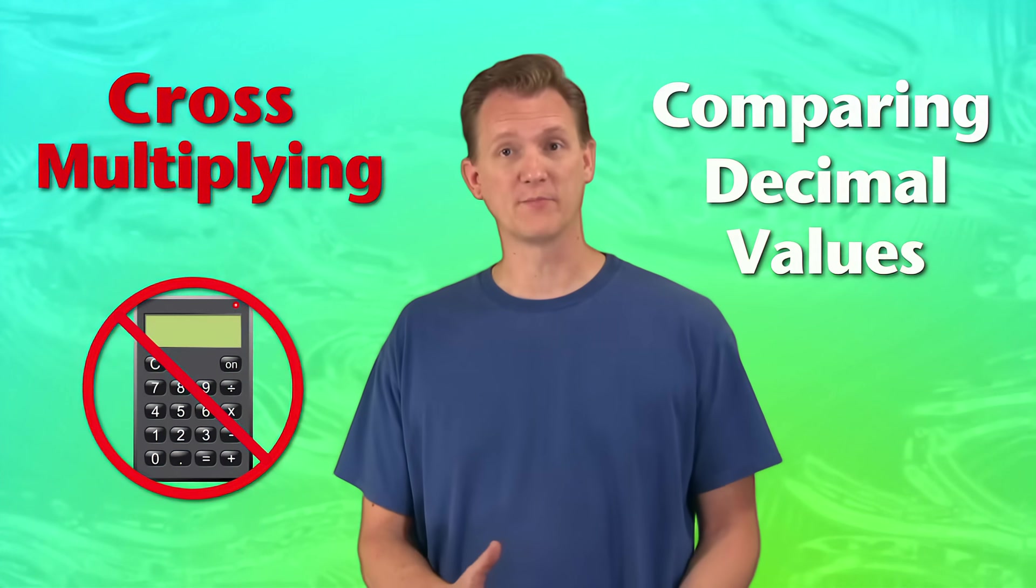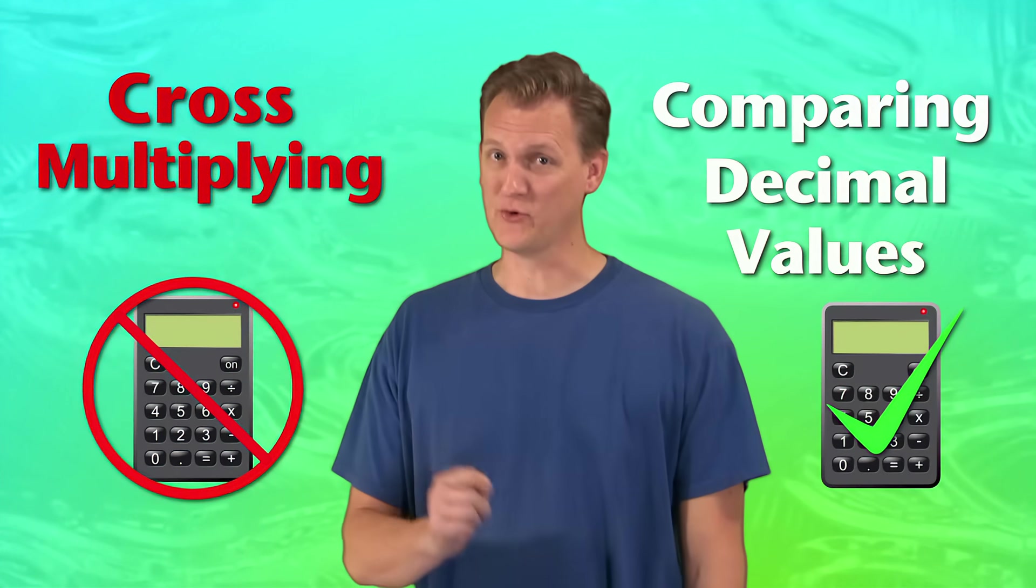Alright, so those are two great methods you can use to compare fractions. Cross-multiplying is simple and works great even if you don't have a calculator. And comparing the decimal values by dividing is easy if you do have a calculator. As always, practice makes perfect. So spend some time doing the exercises for this section and I'll see you next time.